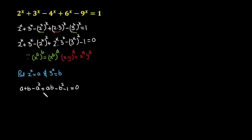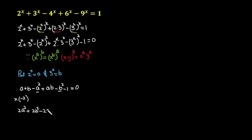In the next step I am going to multiply this whole equation by minus 1 and rearrange the terms. Multiplying: minus a squared times minus 1 gives 2a squared; minus b squared times minus 1 gives plus 2b squared; a times minus 1 gives minus 2a; b times minus 1 gives minus 2b; a·b times minus 1 gives minus 2a·b; and minus 1 times minus 1 gives plus 2. So the equation equals 0.